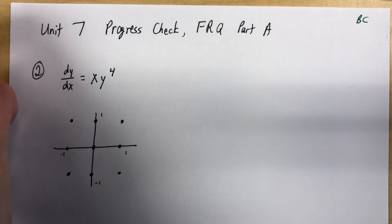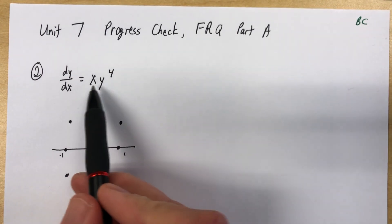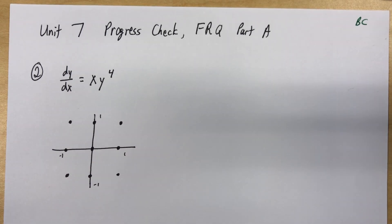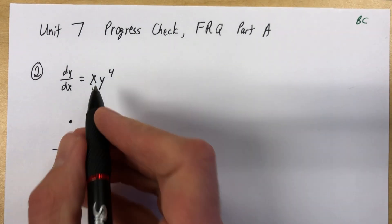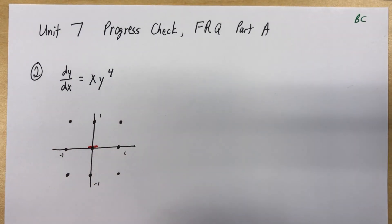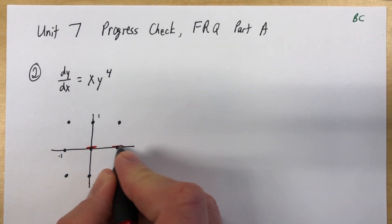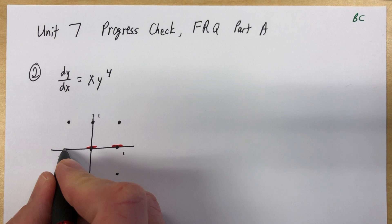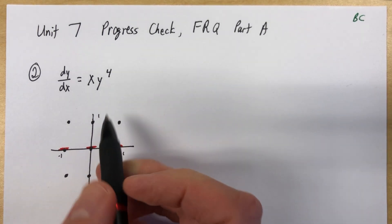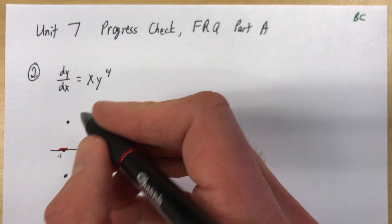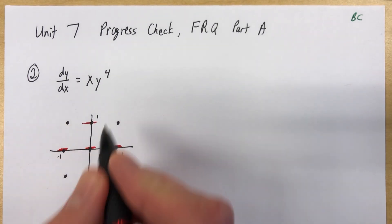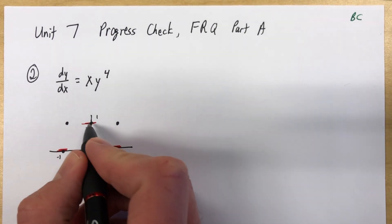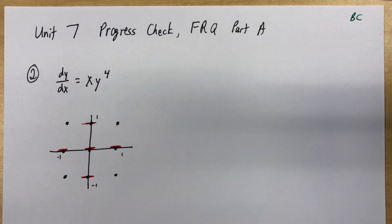I'm going to go for the obvious first. Anytime with the product of two factors, anytime either factor is equal to 0, then we get 0. So at (0,0), our slope is 0. At (1,0), our slope is 0. At (-1,0), our slope is 0. Then if we raise 0 to the fourth power, we have 0. So we're going to have 0 on both axes.